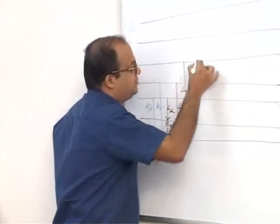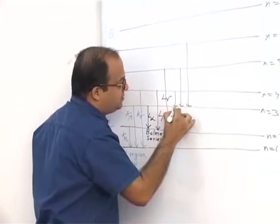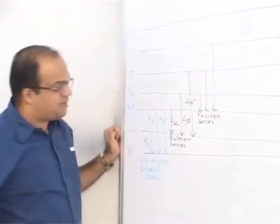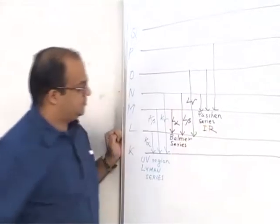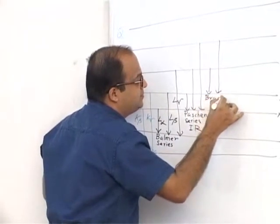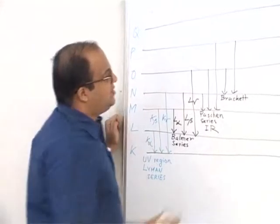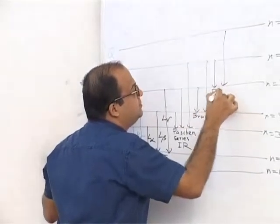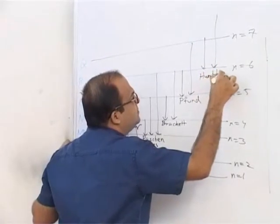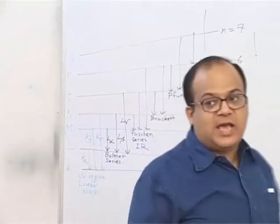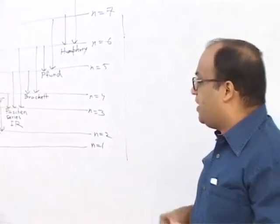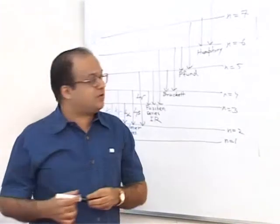The next set of series is called the Paschen series. All these series after Balmer series lie in the infrared region. After Paschen series they have got Brackett. After Brackett is Pfund. And the next series is called the Humphrey series. Lyman series lies in the ultraviolet region. Balmer series lies in the visible region, and the rest of the other series lie in the infrared region of the electromagnetic spectrum.